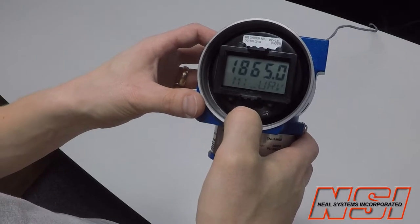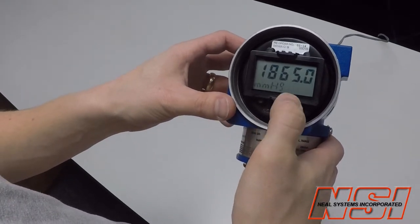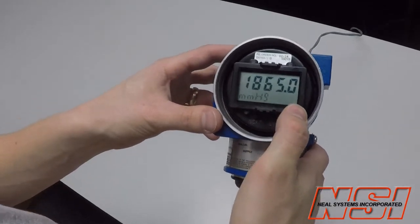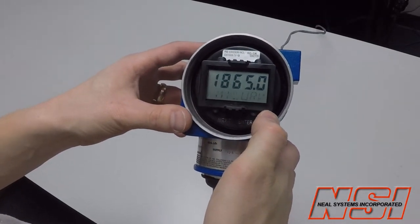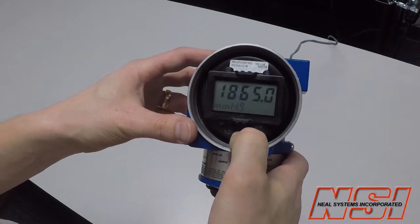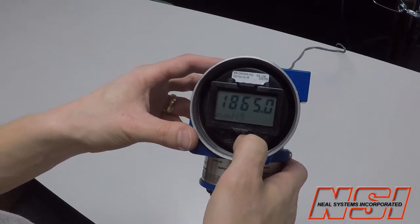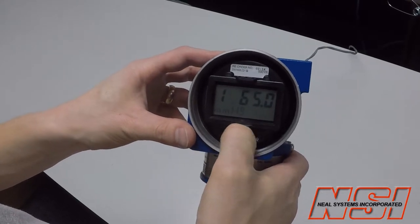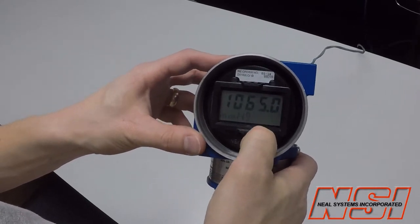So now I'm being asked to change the upper range value. And instead of 1865, let's go enter into that and change it to... Let's see if we can change it to 1000.